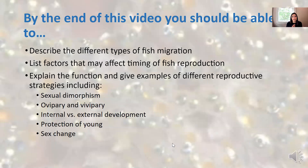Go back and make sure you can check off each of the objectives: describe the different types of fish migration - anadromous, catadromous, and diadromous; list the factors that may affect timing of fish reproduction; and explain the function and give examples of different reproductive strategies, including sexual dimorphism, ovipary, vivipary, internal versus external development, protection of young, and sex change.